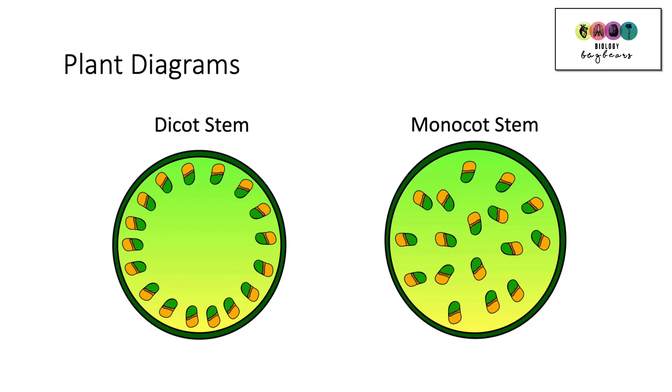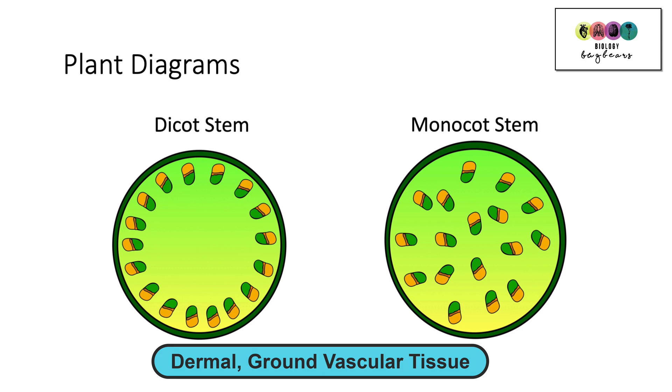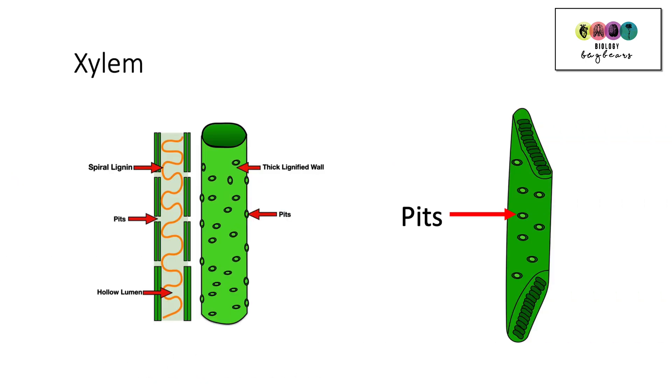Plants are such a huge part of the Leaving Cert course that there has to be some plant diagrams going to appear on an exam paper. You cannot learn plants without learning the diagrams. So start with the stems, the dicot stem and the monocot stem and be able to draw in dermal, ground and vascular tissue. Spend some time on xylem and phloem. Start with xylem vessels and tracheids and use your textbooks to sketch them.